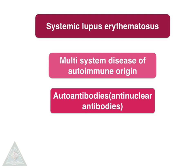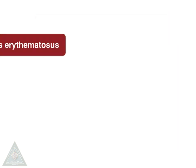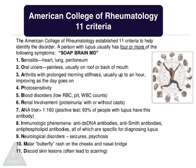SLE has a vast spectrum of autoantibodies, prominent among them being antinuclear antibodies. The American College of Rheumatology has established 11 criteria, of which 4 or more should be fulfilled for the diagnosis of SLE to be made.